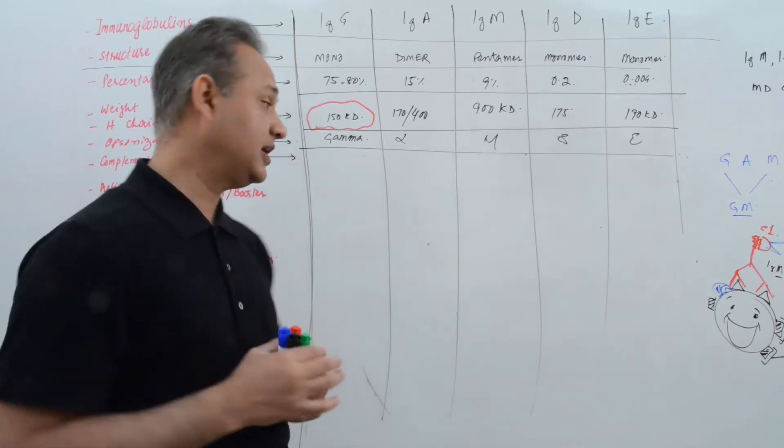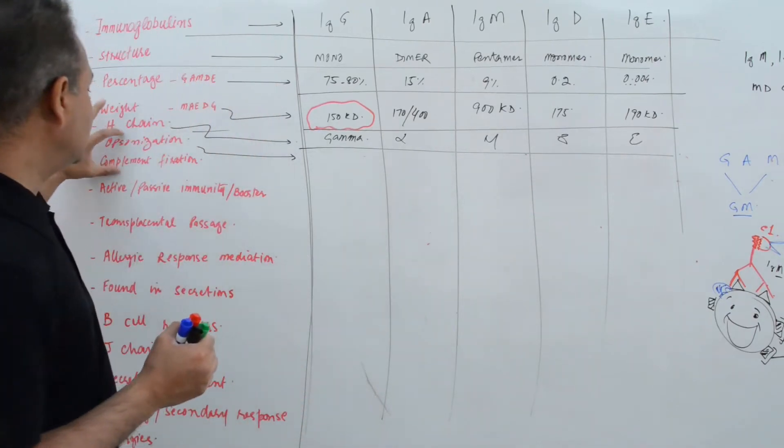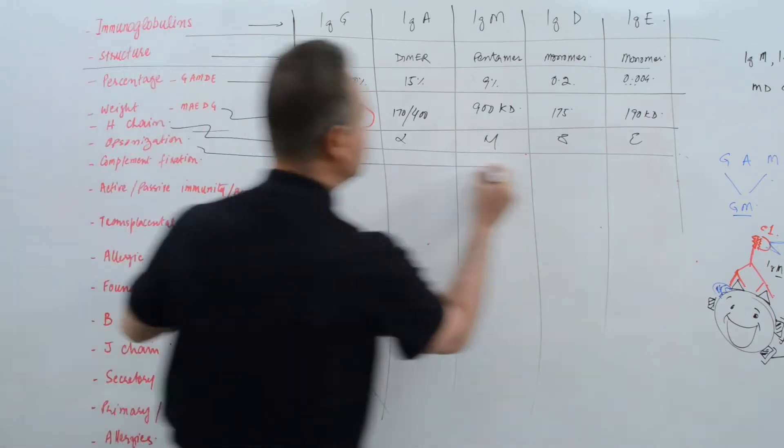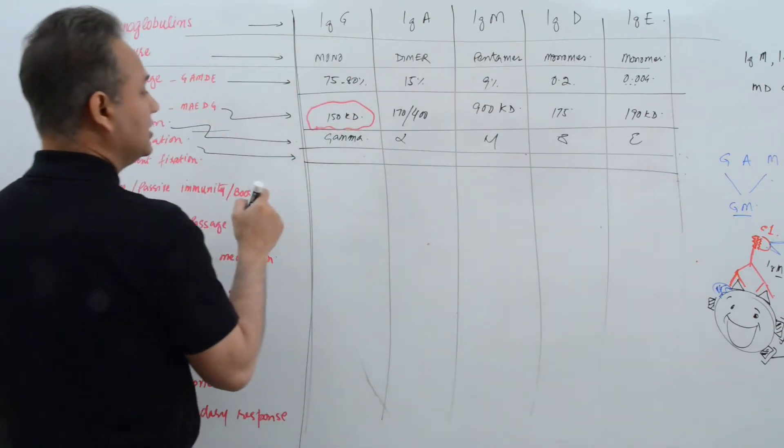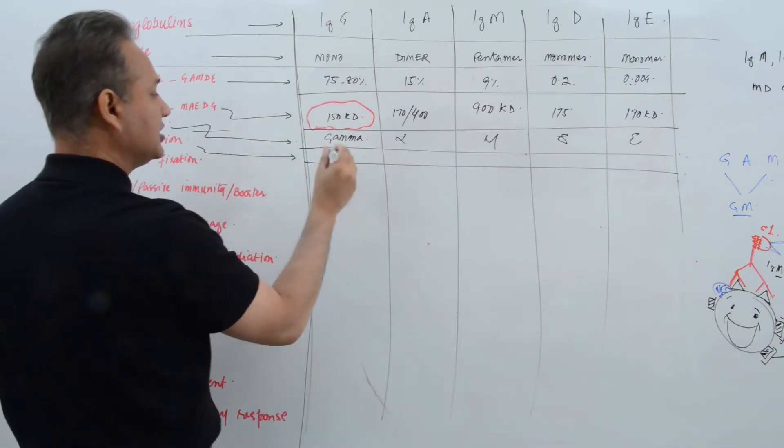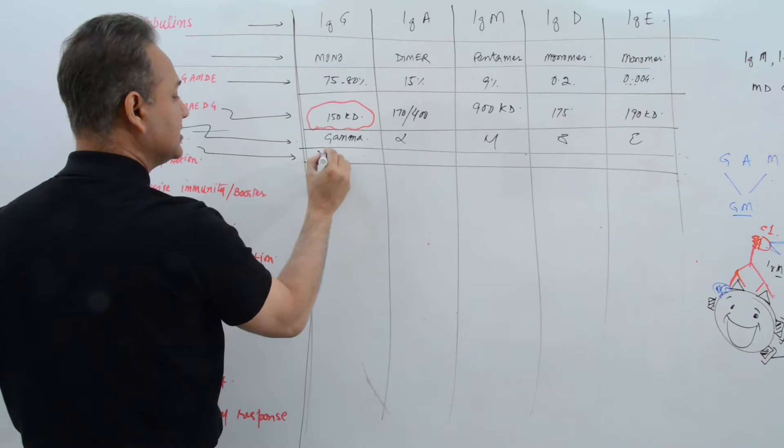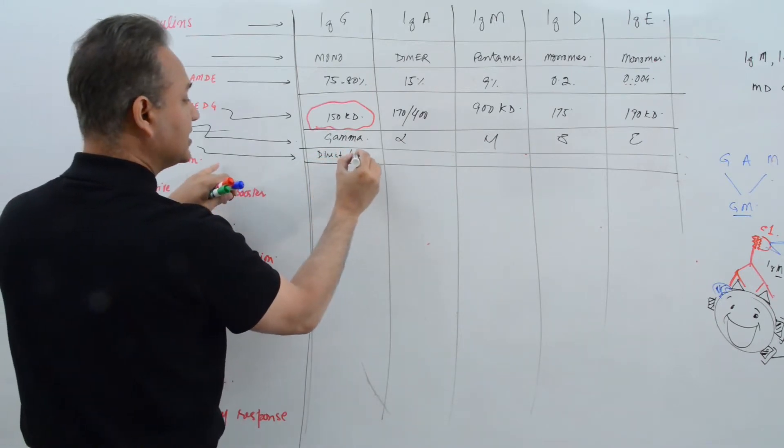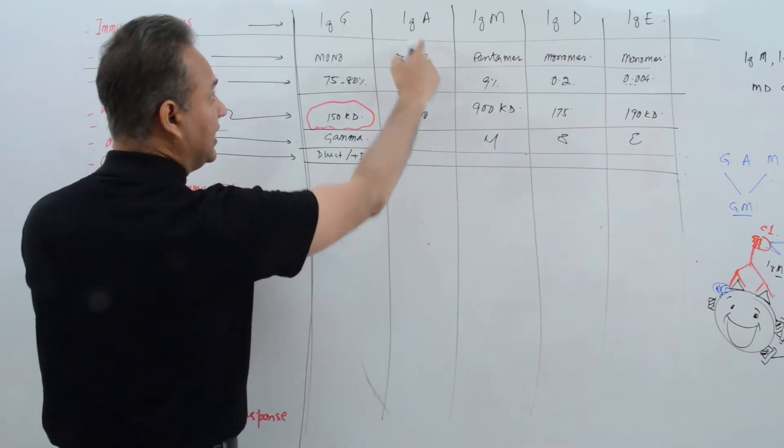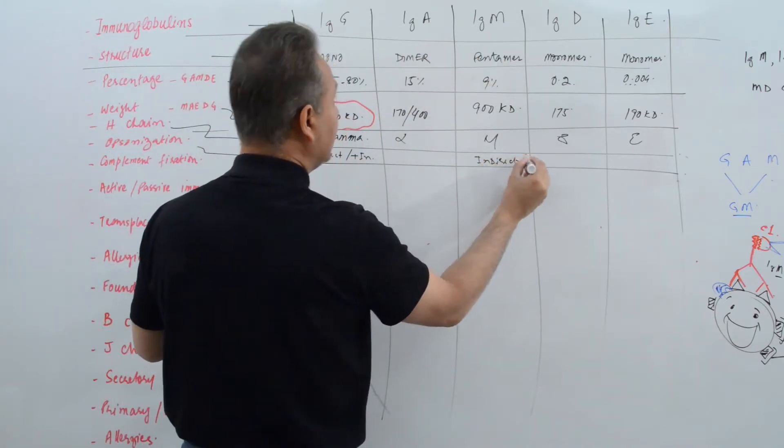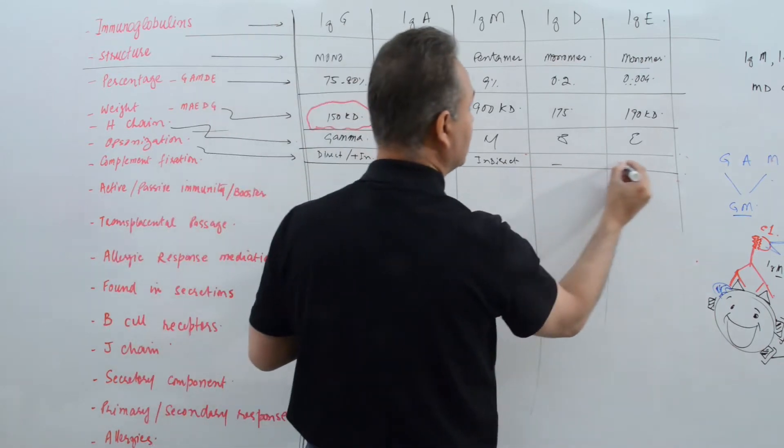All right, so Dr. Mubeen, I'm back. We talked about opsonization and complement fixation. Let's see very quickly opsonization. What immunoglobulins perform opsonization? IgG direct plus indirect, IgM indirect only, and IgA no, D no, E no.